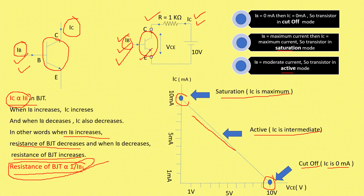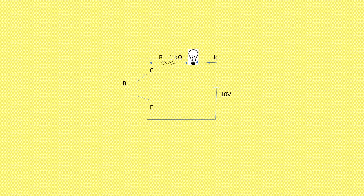Now BJT is used as a switch and it is used as an amplifier in electronic circuits. Now see this diagram. In this diagram, a 10-volt battery is connected, and in series with it, one bulb, one resistance of 1 kilo ohm, and BJT is connected. Now we will see the three conditions: cutoff, saturation, and active.